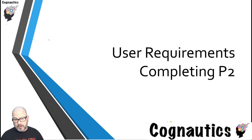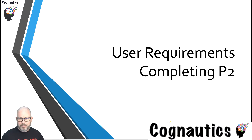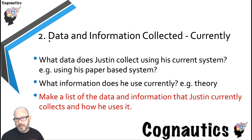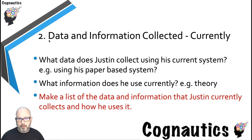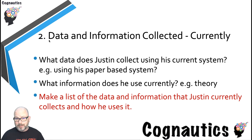Let's have a look at the next part of P2, and this is where we start to focus on information and its journey into the system and out of the system. This might all sound a bit unfathomable and strange at this stage, but let's look at what he currently does first of all. This will be one of your headings: data and information currently collected. In other words, what data or information does Justin use in his current paper-based system? He will write down appointments on a card or in his diary, and that's the way that when someone rings up to book an appointment he can look at that card and find another time. So he's going to find a digital way of making those decisions for him.